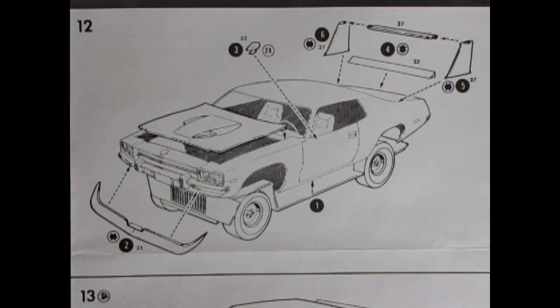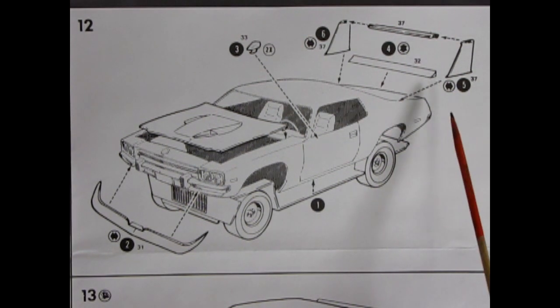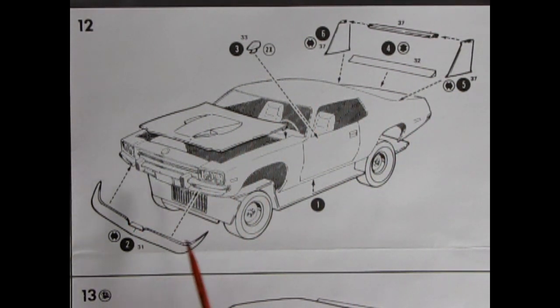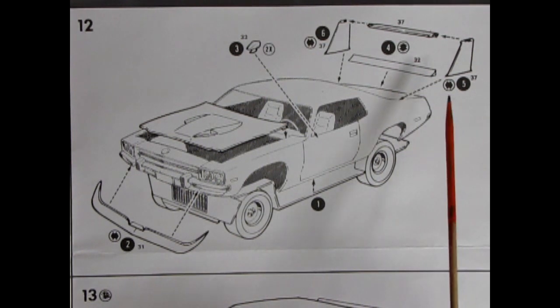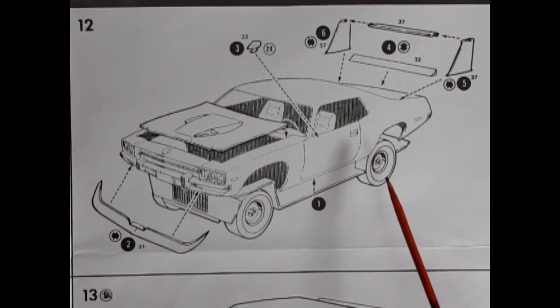Here we have the assembly steps for both stock and custom. One of them being a street machine that came out in the 80s and believe it or not it was painted red. I'll show you the box top for that.